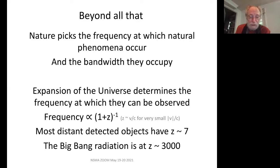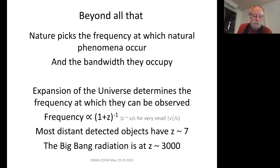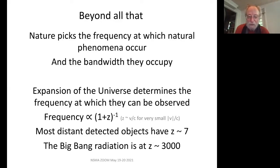Nature picks the frequency at which natural phenomena occur and the bandwidths they occupy. Beyond that, even expansion of the universe determines the frequency at which the phenomenon can be observed, because things shift in frequency — as even cell phones are subject to the Doppler effect. The most distant detected objects have redshifts of about a factor of seven or greater, meaning radiation received is at a frequency seven or eight times lower than the frequency at which it was emitted. The Big Bang radiation we see is not at the beginning of time — it's a few hundred thousand years after the origin of the universe, at a redshift of about 3,000.